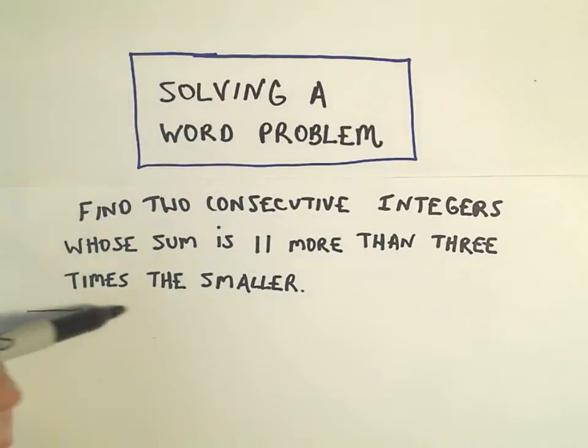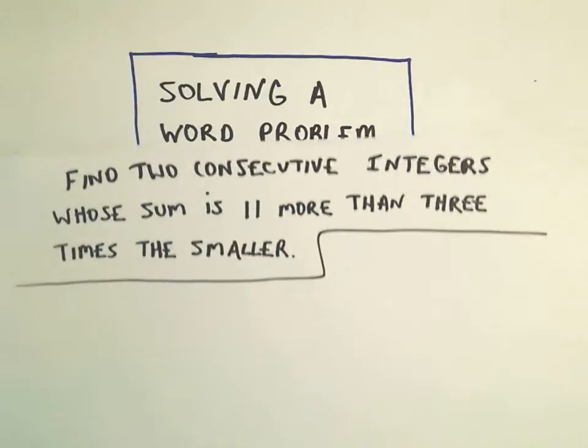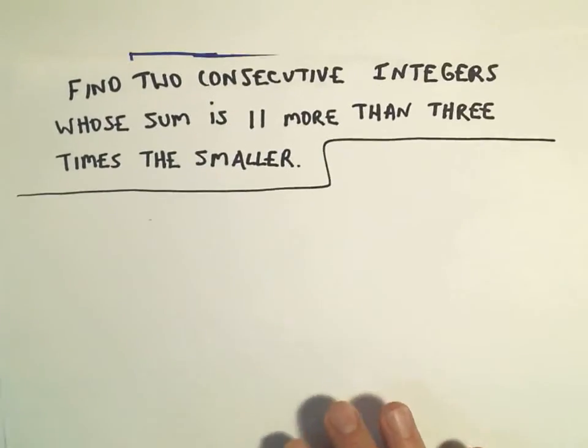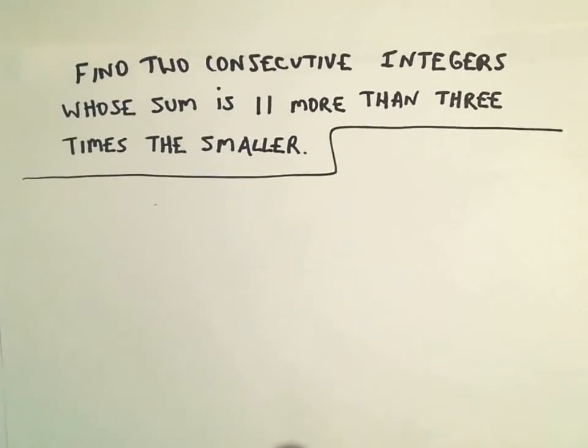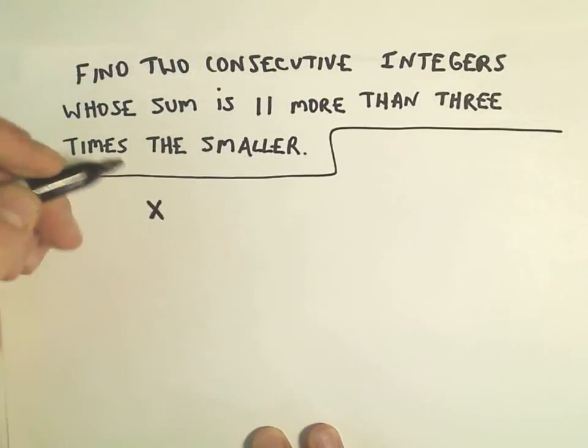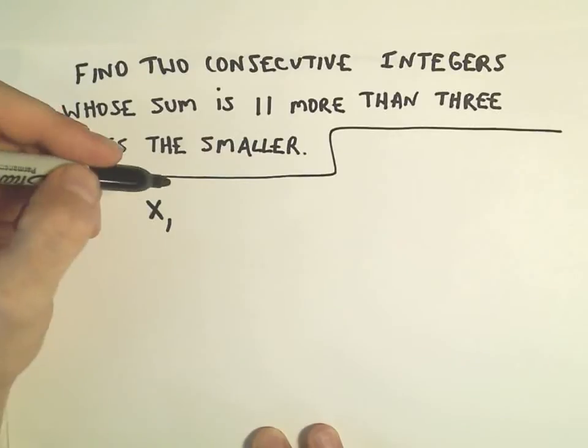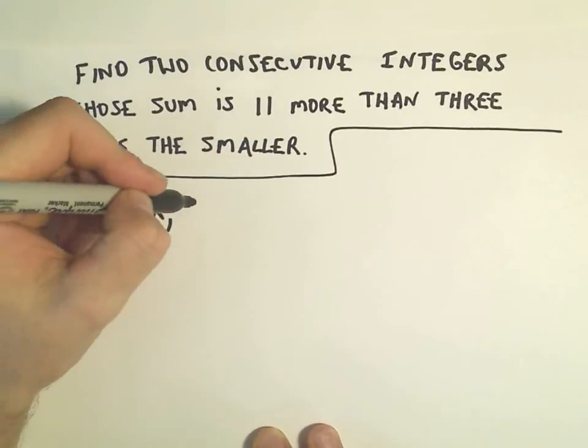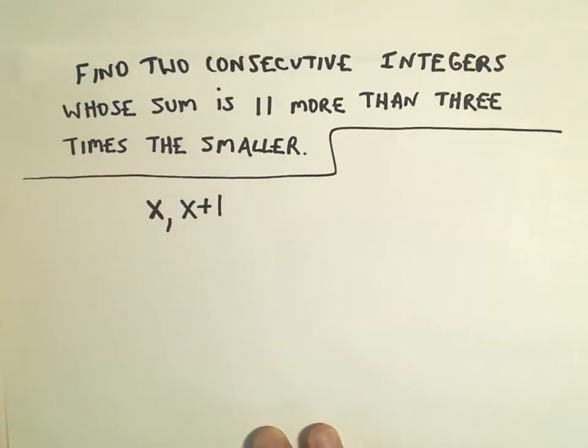I think the hard part is getting the initial equation set up. I'm going to call my consecutive integers x and x+1. I'll call the smaller one x, and then to get to the consecutive integer right after it, I would just add 1 to that.